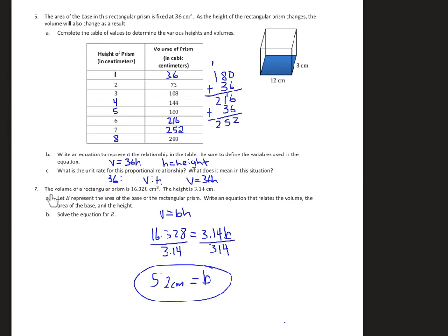For number seven, we're using the base times height formula. Since we're already given the height and we have the volume, we're looking for the base. We're going to say that 16.328 equals 3.14, the height, times my base. So I divide by the 3.14 to cancel it out, leaving me my base. 16.328 divided by 3.14 is 5.2 centimeters, which will be the base.